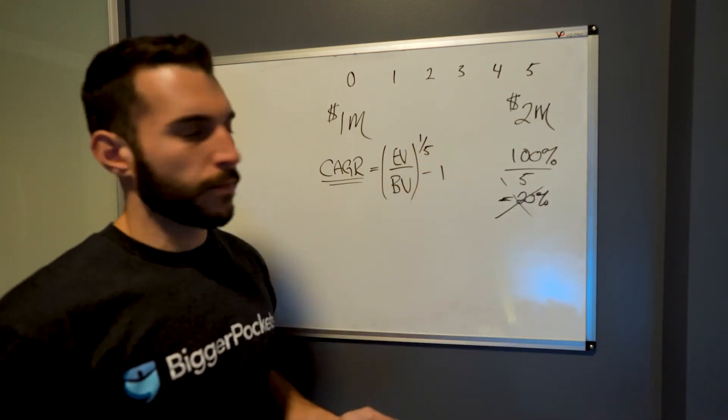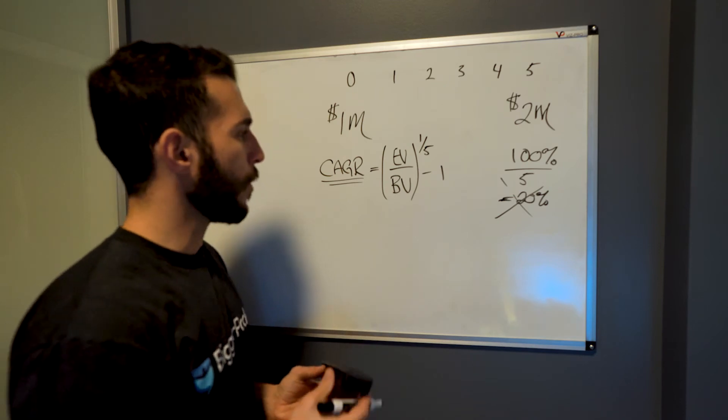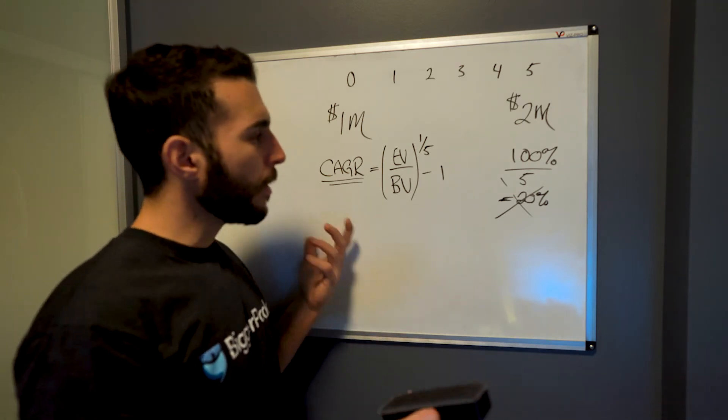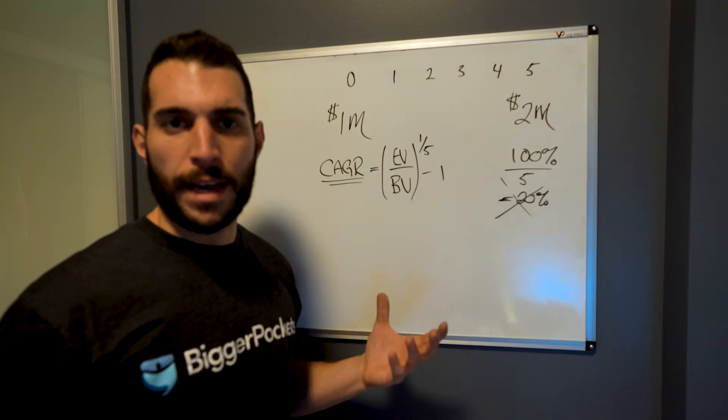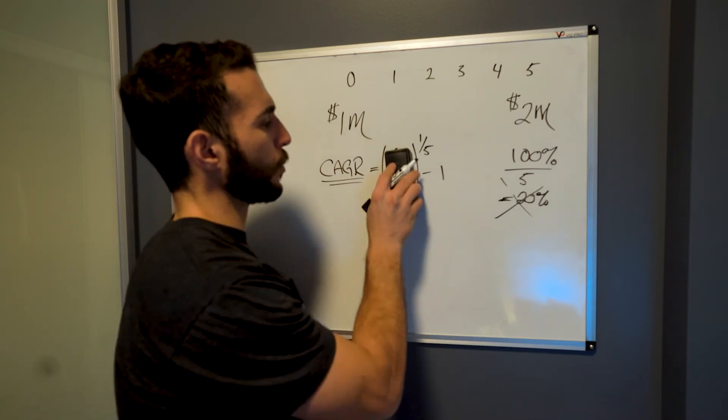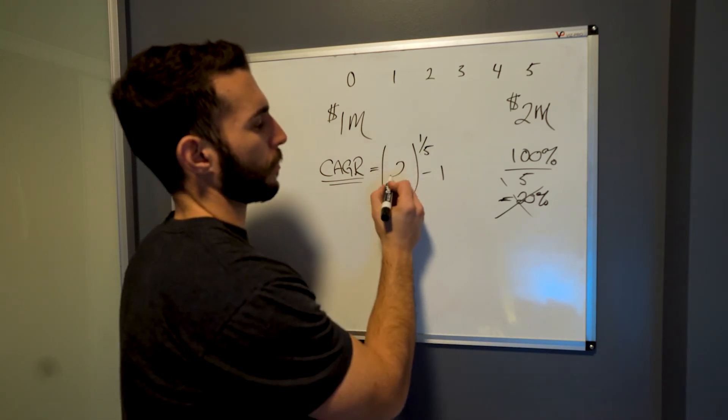Now, ending value, 2 million. Beginning value, 1 million. Simple enough. 2 over 1. Well, anything over 1 is just that number in the numerator or on top. So 2 over 1 is just 2.